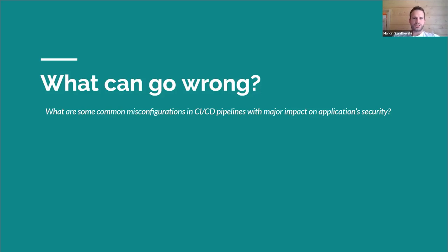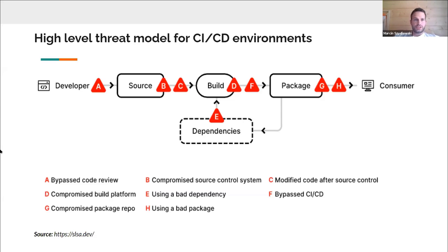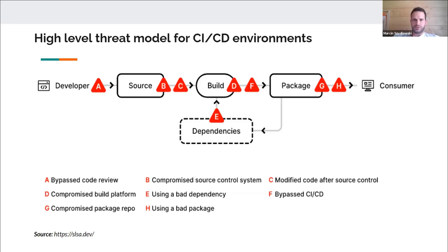The question we need to ask ourselves is: what can go wrong? What are the components of the software development toolchain and what can happen to each of them? This picture comes from the SALSA framework, which I totally recommend you read because it gives a nice perspective on threats. People from the SALSA standard presented some high-level threats at each stage of the software development toolchain. You might say your pipeline looks different because you're using CloudFormation, Terraform, or Ansible, but these threats are quite common across all those tools.